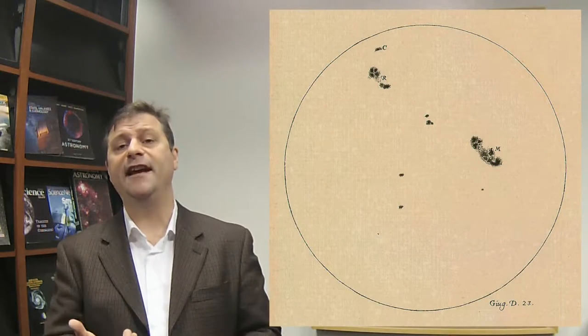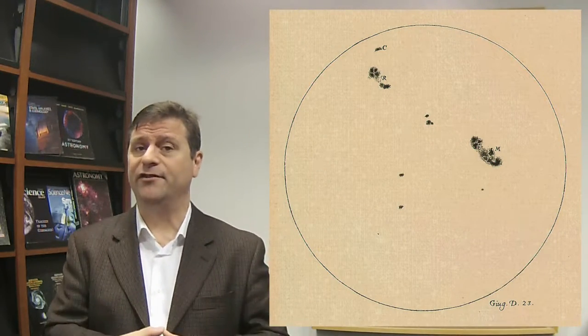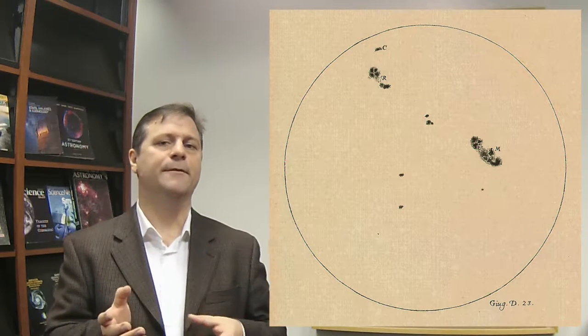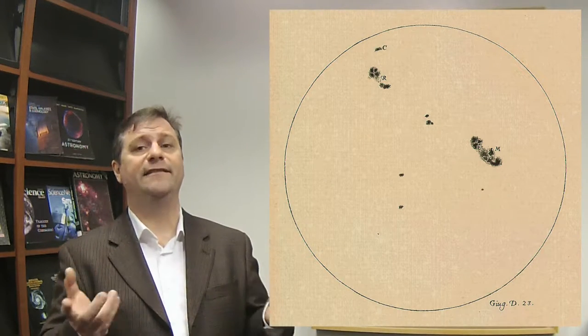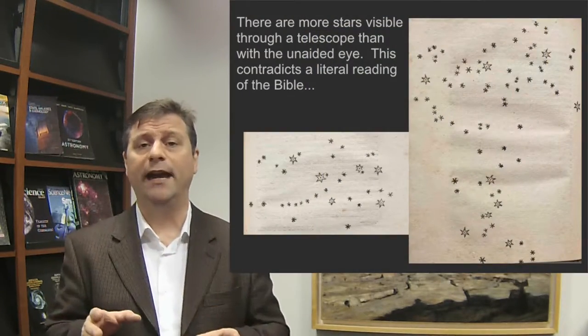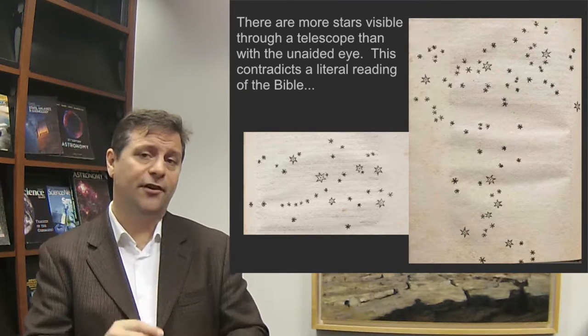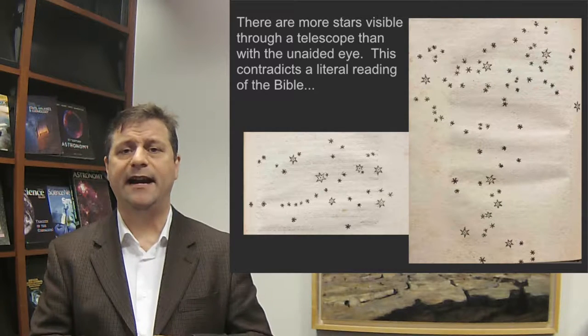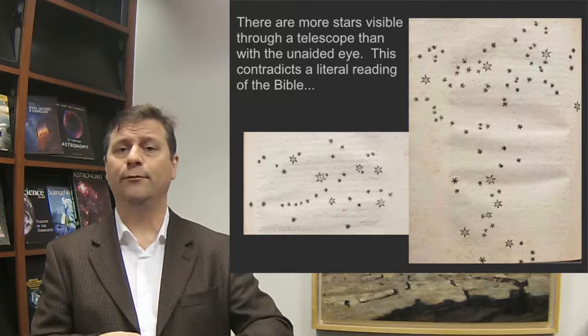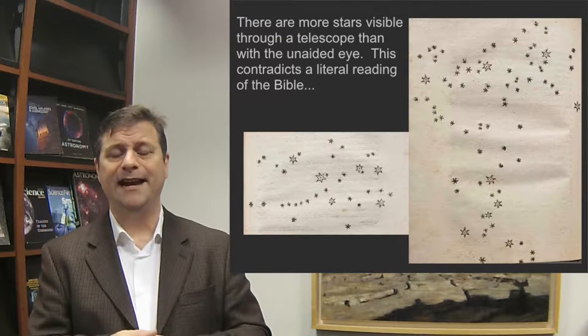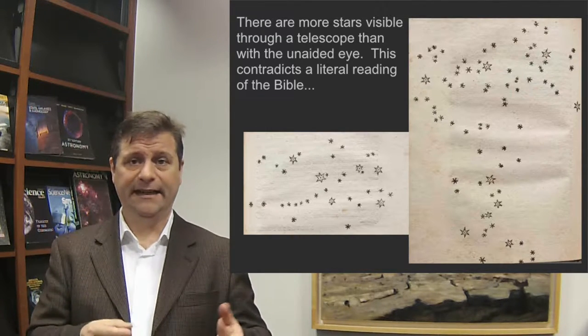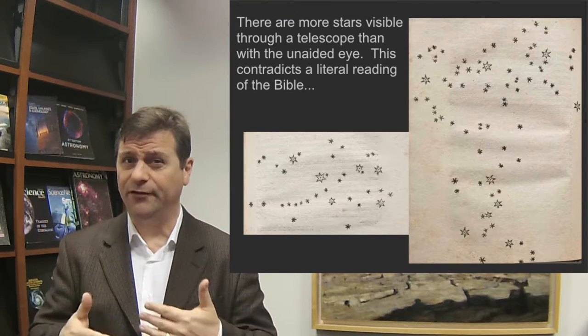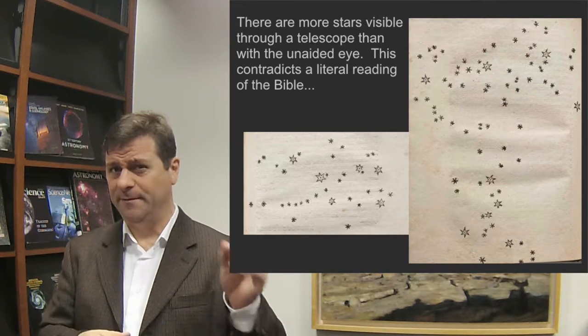The next thing he noticed was that the sun also had imperfections, sunspots. He said it's not a perfect object, it has dark surfaces on it, meaning it's also imperfect. Third, he discovered that when he pointed his telescope at the Milky Way, the Milky Way itself had many more stars visible than can be seen with the naked eye. One of the core essences of Scripture was that the purpose of stars at night was to illuminate us. So how do stars illuminate us if we cannot see them and they can only be seen with a telescope?